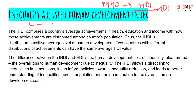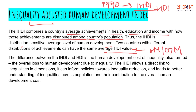The IHDI combines a country's average achievement in health, education, and income with how those achievements are distributed amongst the country's population. The three basic dimensions of HDI remain the same, but now what is included is how equally they are distributed and how much inequality exists. Thus the IHDI is distribution-sensitive. HDI is calculated on the basis of arithmetic mean whereas IHDI is calculated on the basis of geometric mean — this is just for your knowledge, not typically asked in exams.